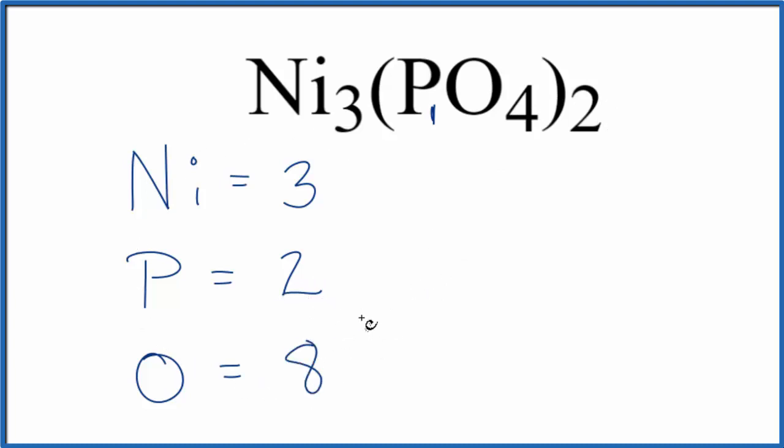So these are the number of individual atoms. If we want to know the total number of atoms for Ni3(PO4)2, we just add these up: 8 plus 2, that's 10, plus 3 equals 13 total atoms for nickel 2 phosphate.